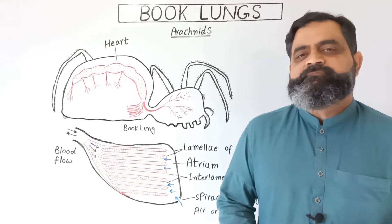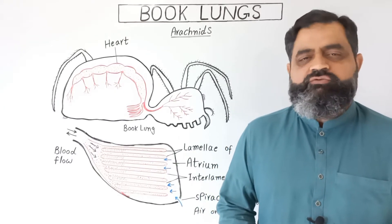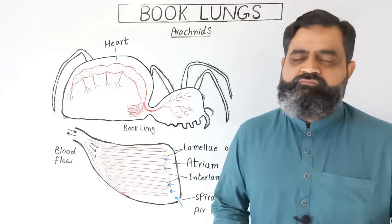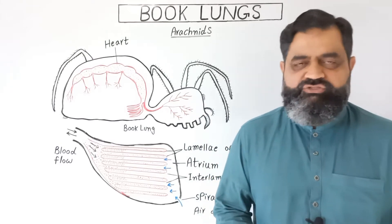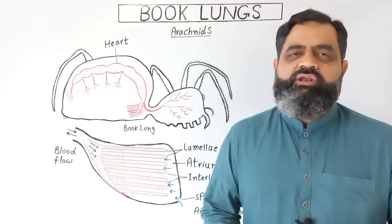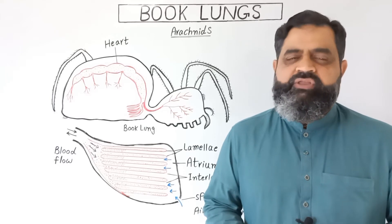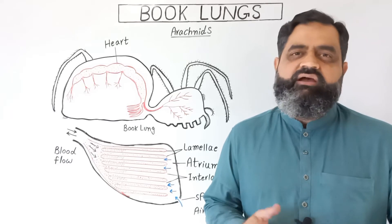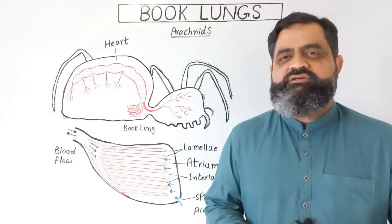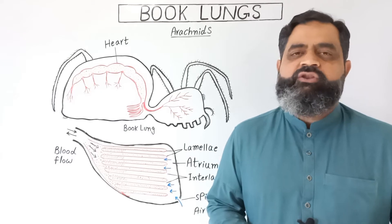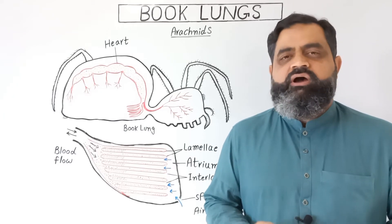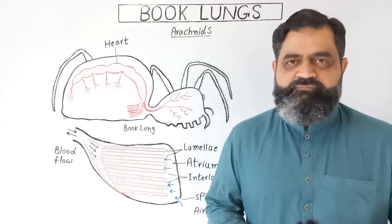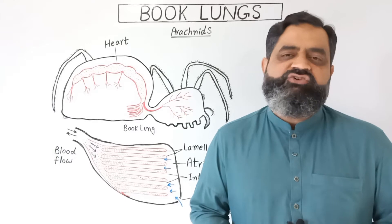Hello to all students. In this video lecture, we are going to discuss a structure which is known as book lungs. Book lungs are specialized respiratory structures which are found in animal kingdom in phylum arthropoda. In phylum arthropoda, there are certain arachnids like spiders, scorpions, and some other marine or freshwater arthropods. They use book lungs for respiration. So let's discuss this structure and its function in detail.